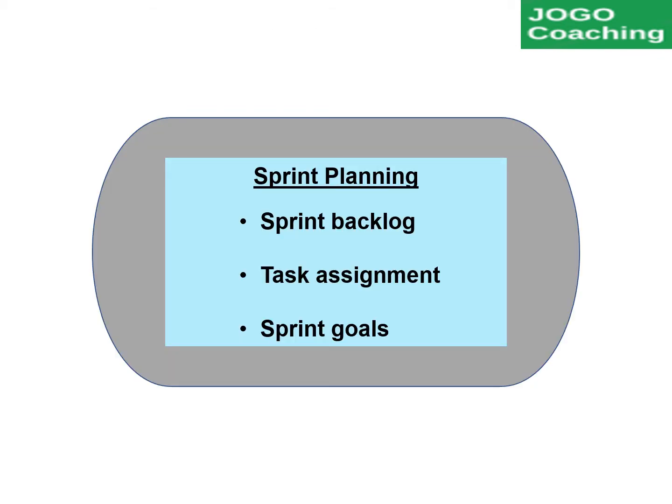Sprint planning is the first event in the sprint cycle. The Scrum Master will facilitate this meeting. The team will understand the user stories from the product backlog, and the product owner will explain them. Based on the team's available bandwidth, the work scope will be finalized by the team. The committed backlog is called the sprint backlog.